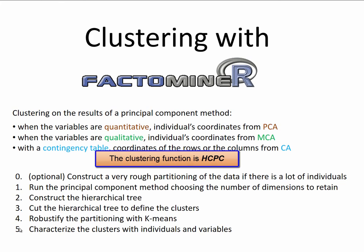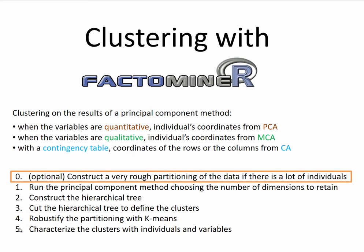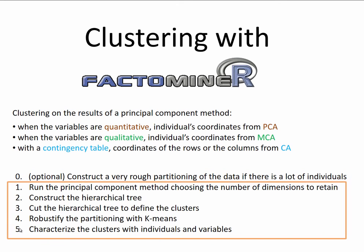The clustering function in FactoMiner works according to the following steps. First, there's an optional step. If we have lots of individuals, it's possible to construct a very rough partitioning of the data, for example with k-means, before running the main clustering algorithm. In this way, the final clustering will be with respect to these pre-processed classes. After this optional first step, the other steps can run. First, this involves running a principal component method, which in turn requires choosing the number of dimensions to retain.